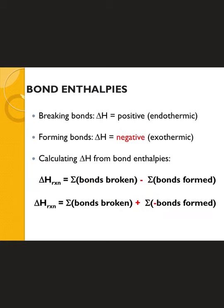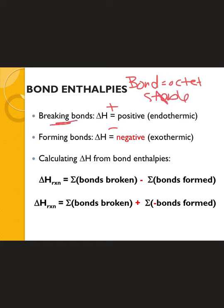Breaking bonds gives a positive delta H — it is an endothermic process — and forming bonds gives a negative delta H, an exothermic process. That really does make sense: the goal of bonding is to complete the octet and become more stable, so breaking a bond decreases stability and requires energy. Making something more stable, like going to the ground state, releases energy, giving you the negative delta H.